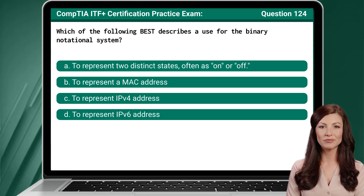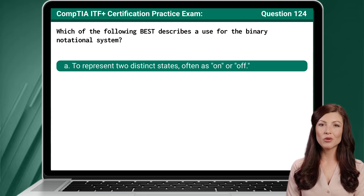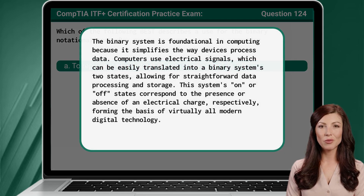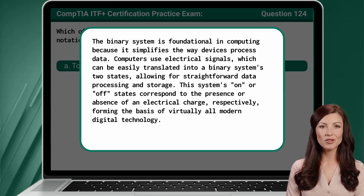Question 124. Which of the following best describes the use for the binary notational system? The answer is A: to represent two distinct states, often as on or off. The binary system is foundational in computing because it simplifies the way devices process data. Computers use electrical signals, which can be easily translated into a binary system's two states, allowing for straightforward data processing and storage. This system's on or off states correspond to the presence or absence of an electrical charge, forming the basis of virtually all modern digital technology.